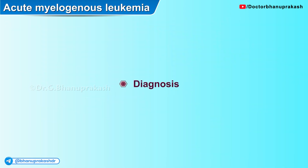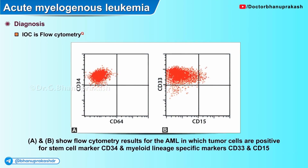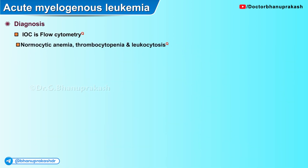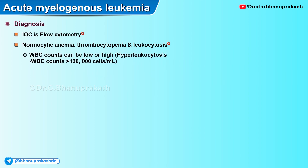Moving on to diagnosis of acute myelogenous leukemia, the investigation of choice is flow cytometry. Patients usually present with normocytic anemia, thrombocytopenia, and leukocytosis. Note that the white cell count can be low or high.